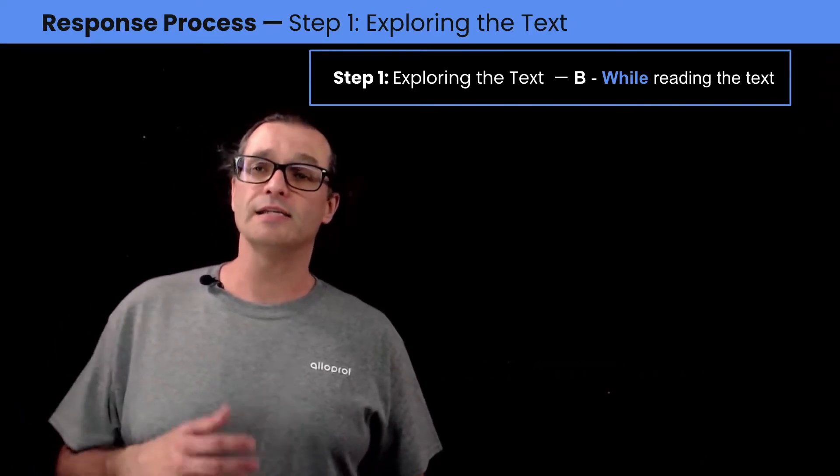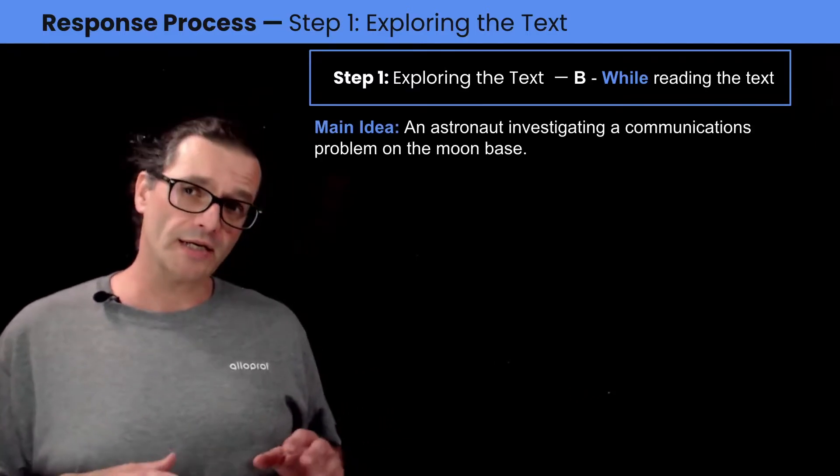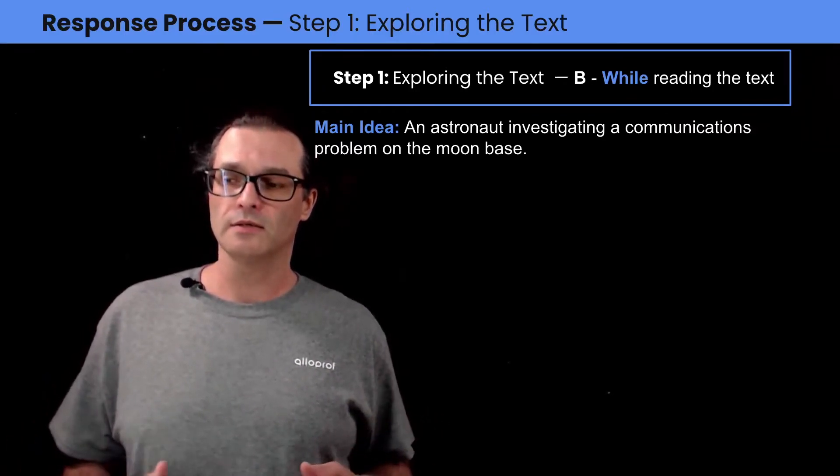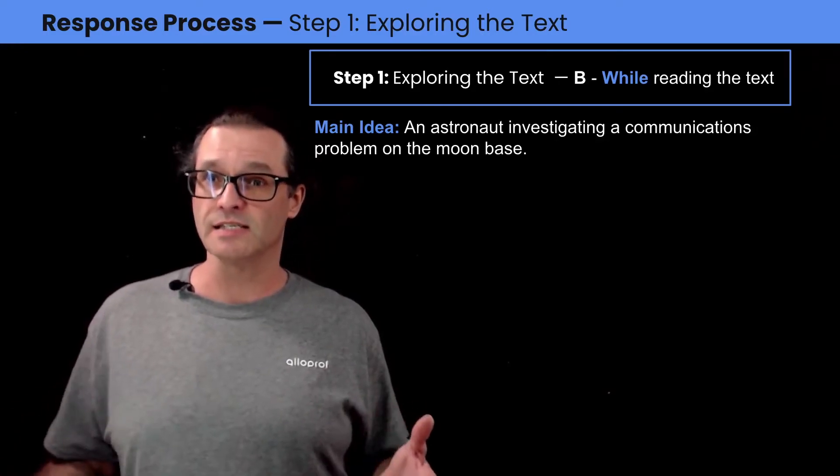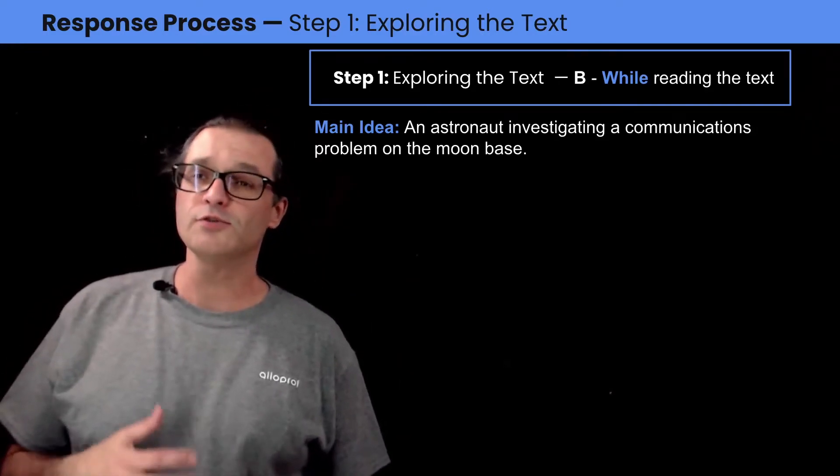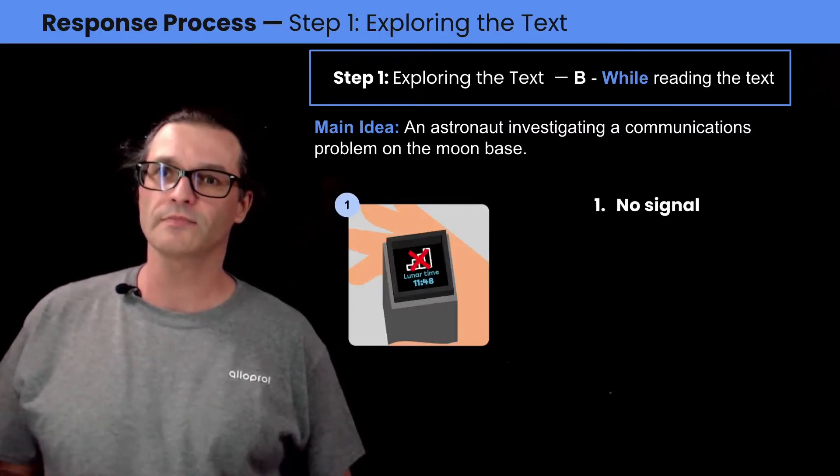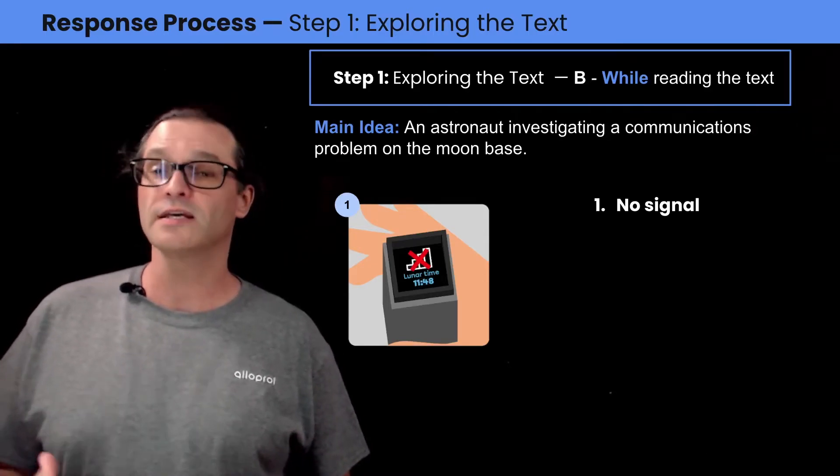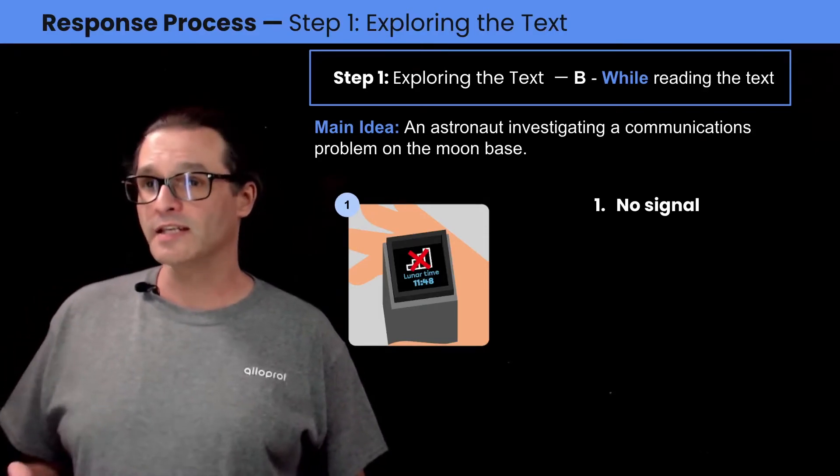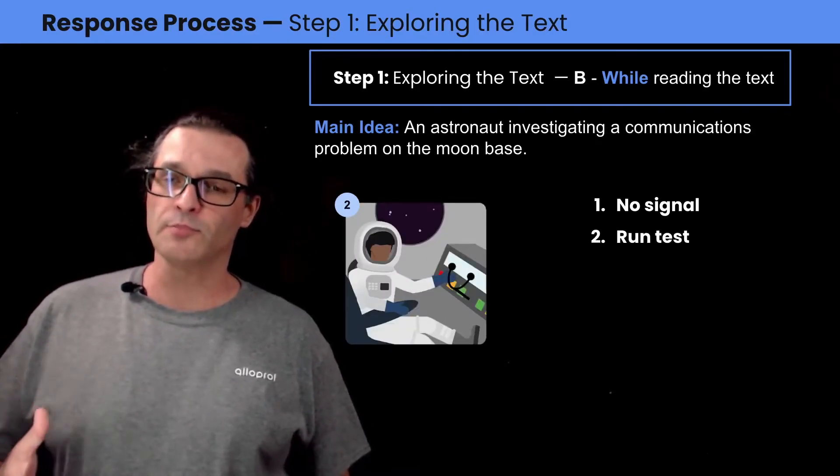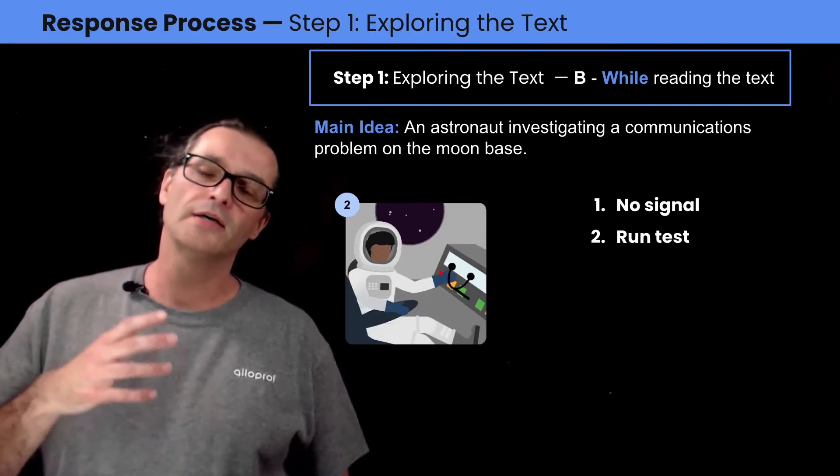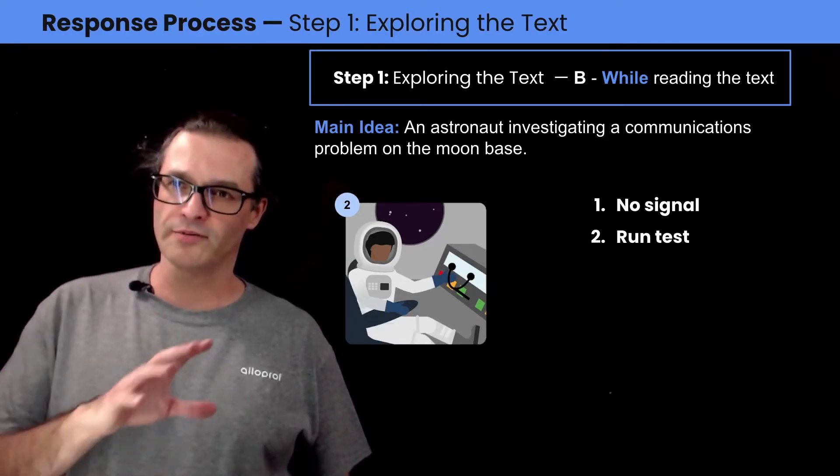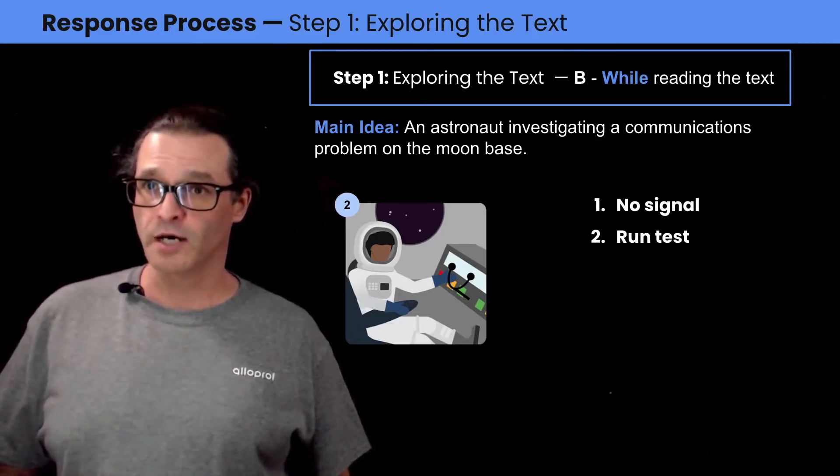All done. Good. Let's take a look at the main idea of this story. The main idea is basically an astronaut looking into some communications problem on the moon base. But what are the story elements that tell us this is the idea of the story? The first story element is the initial situation. In this story, it is when astronaut Bob tells us he has no bars on his phone because there's a problem with the communications system. The second element is when he asks the computer for a test on the communications system. And this is when the computer answers that there's a problem with the antenna outside and that astronaut Bob has to go check it out.